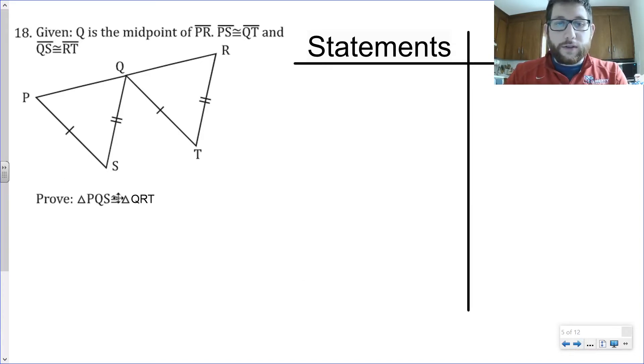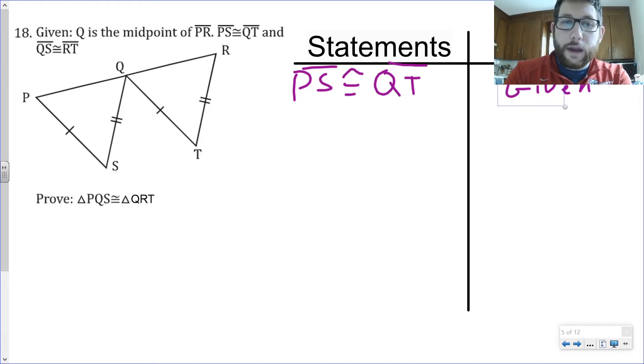Let's take a look at this first example. Notice we're trying to prove that the two triangles are congruent. Prove triangle PQS is congruent to triangle QRT. And then notice our given statement. We've got two sets of sides they've already put on here, and they've also told us that Q is the midpoint of PR.